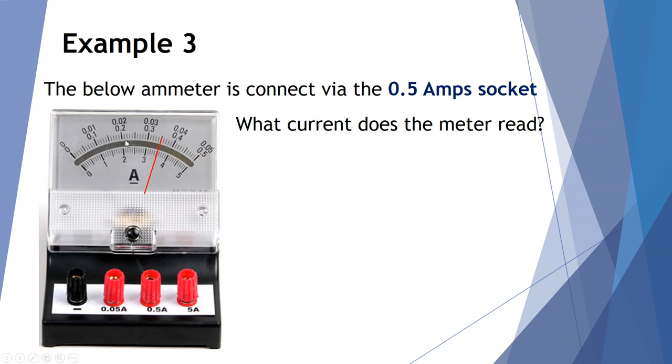Example number three, we're looking at our amps from an ammeter. What current are we measuring here when we're using the 0.5 socket? So 0.5 is the middle scale. See if you can work that out.